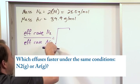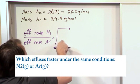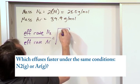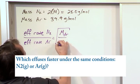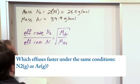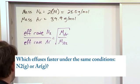If this is gas 1 and gas 2, this is molar mass 2, molar mass 1. So, this is going to be the molar mass of argon on the top, and this is going to be the molar mass of N2 on the bottom. It's flip-flopped from the way we have it written right here.